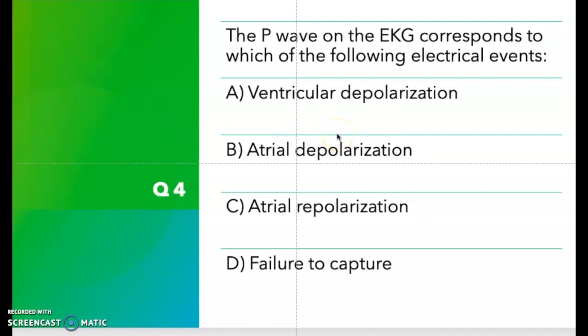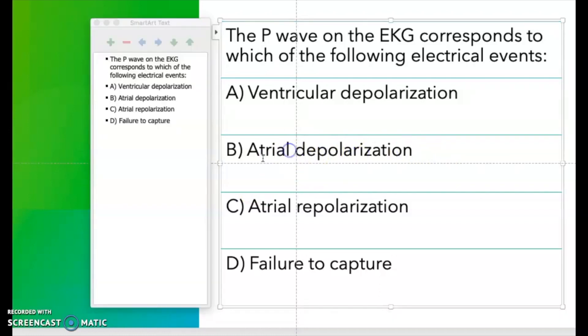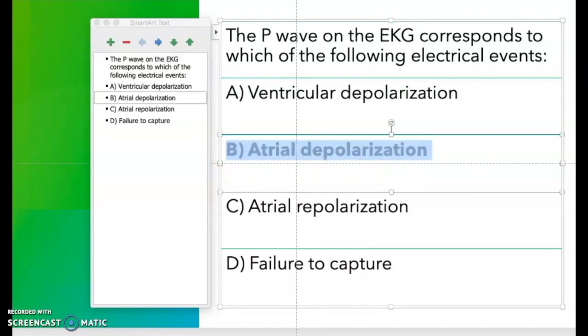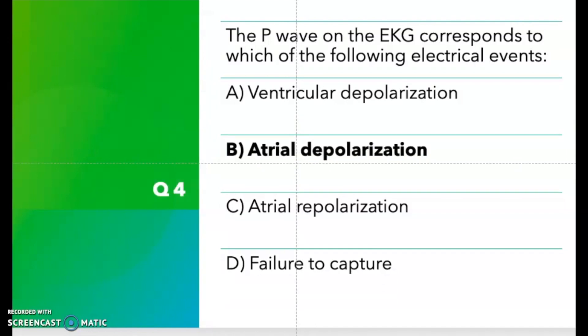Question four: the P wave on the EKG corresponds to which of the following electrical events? On the EKG we have different components — the PT, QRS complex, and PR intervals. The options are: A) ventricular depolarization, B) atrial depolarization, C) atrial repolarization, D) failure to capture. The correct answer is atrial depolarization.